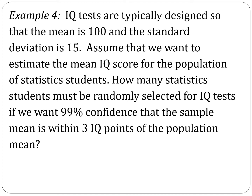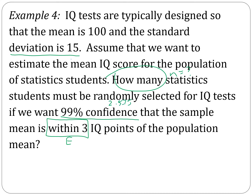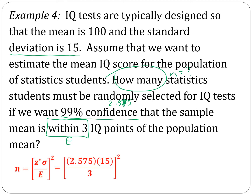Let's do another. IQ tests are typically designed so that the mean is 100 and standard deviation is 15. Assume that we want to estimate the mean IQ score for the population of statistics students. How many statistics students must be randomly selected for IQ tests if we want 99% confidence that the sample mean is within three IQ points? Margin of error is 3; 99% confidence gives a Z-score of 2.575. The standard deviation is 15. Plug them all in, simplify the fraction, square it, and always round up: 166.